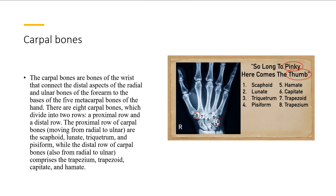Let me give some context on what carpal bones are. The carpal bones are bones of the wrist that connect the distal aspects of the radial and ulnar bones of the forearm to the bases of the five metacarpal bones of the hand. There are eight carpal bones, which divide into two rows: a proximal row and a distal row.